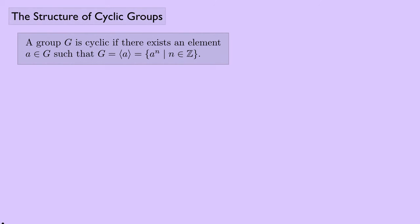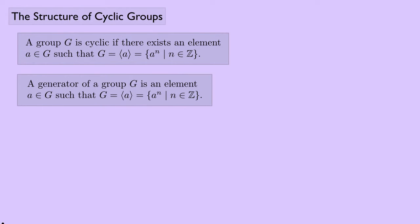Let's review what we know about cyclic groups. A group G is cyclic if there exists an element A in G such that G equals all the powers of A. The generator of the group is that A which generates the group, meaning the entire group is made up of powers of A.